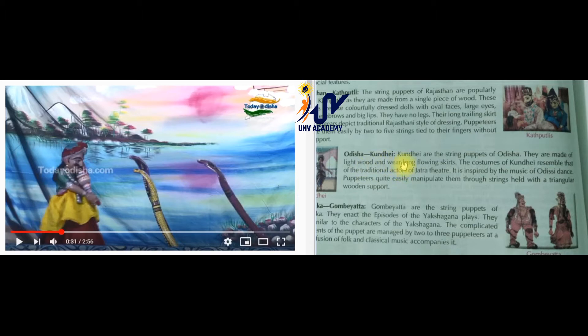Next is Odisha Kundahi. Kundahi are the string puppets of Odisha. They are made up of light wood and are made with long flowing skirts. Their costume resembles the traditional Jatra theatre of Odisha. Odisha's dance is included in their movements. Puppeteers manage them very easily with a string and a triangular wooden support. I am showing you a little clip of this Kundahi puppet dance.